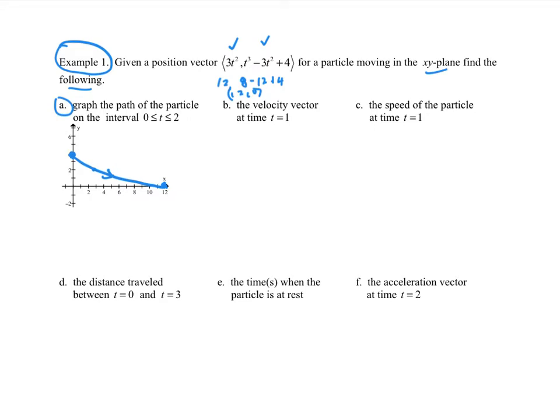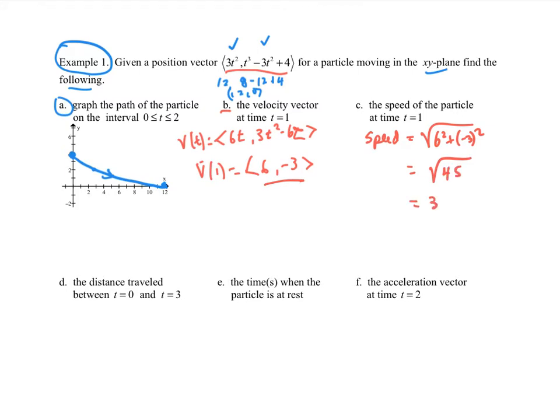Then for part b, they ask us for the velocity vector. That's just taking the derivative of each one of those parts, so I'm going to get 6t, comma, 3t squared minus 6t. That'd be your velocity vector. They want the velocity at time one, so I'm going to get six, comma, three minus six, negative three. The speed at time one is going to be the magnitude of the velocity at this time, just six squared plus negative three squared, which is the square root of 45. I think you can simplify that to three square root of five.